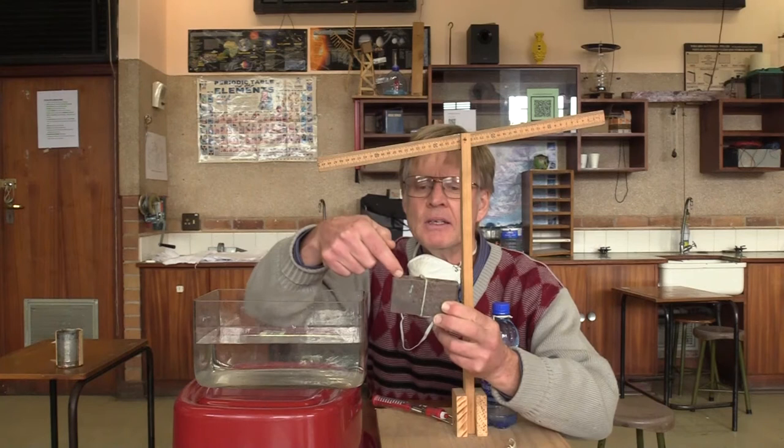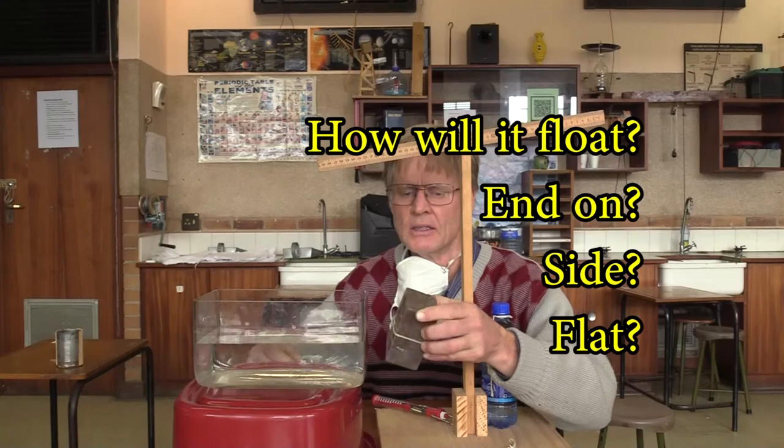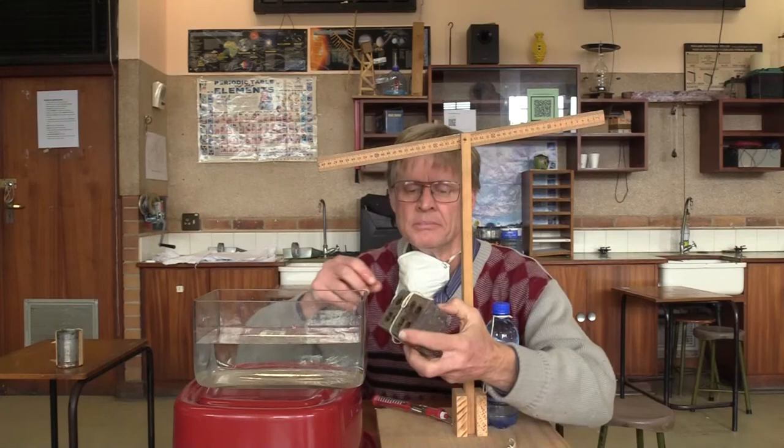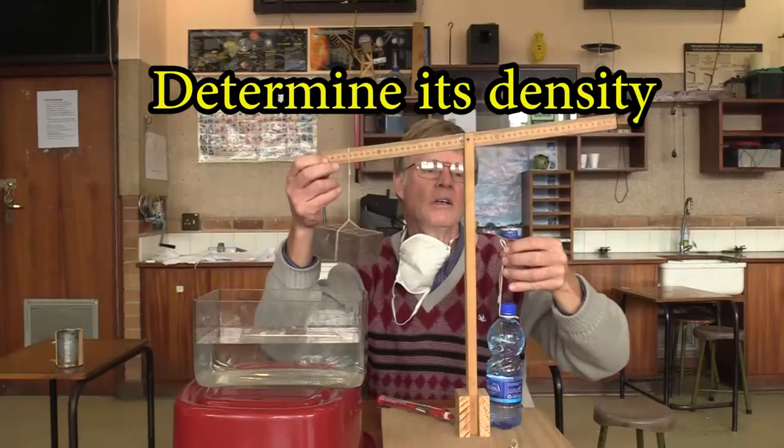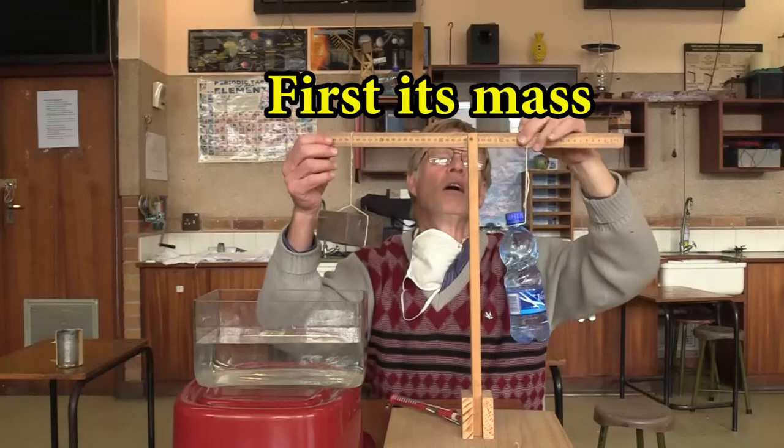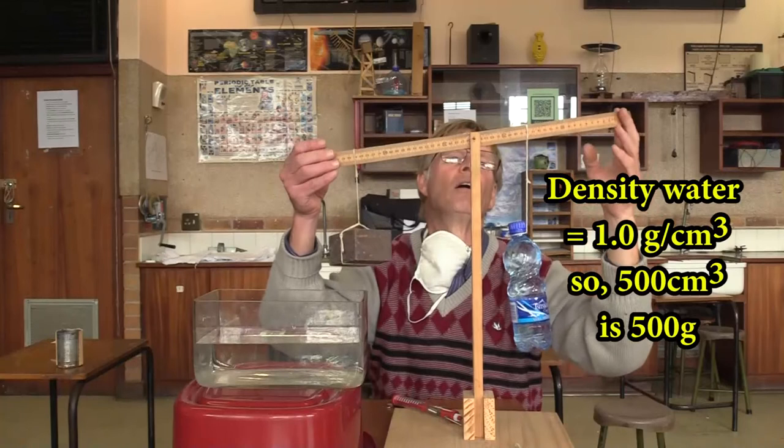Part 2. Will this block sink or float? Will it float end on, side on, flat? Well, how are we going to figure that out? By determining the density. So, first the mass. We balance the 500 millimeter bottle of water, which we know is 500 grams, because the density of water is 1 gram per cubic centimeter. There we are.